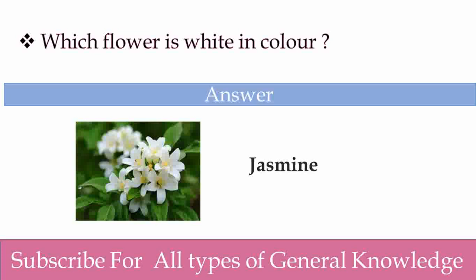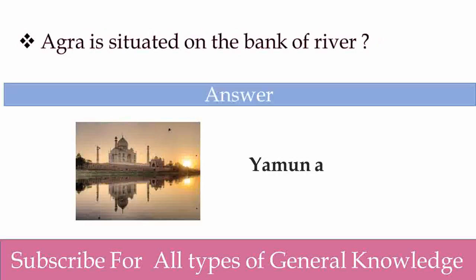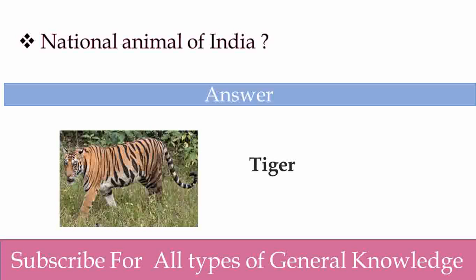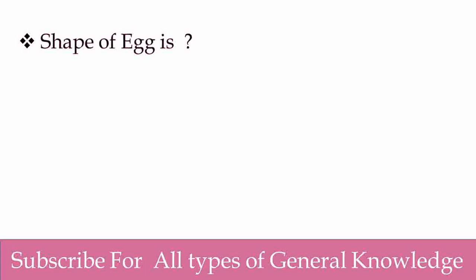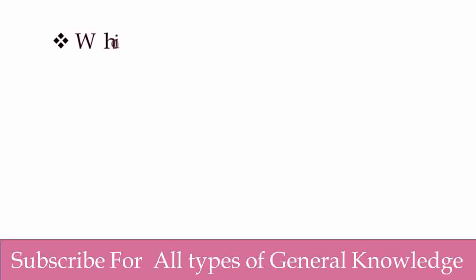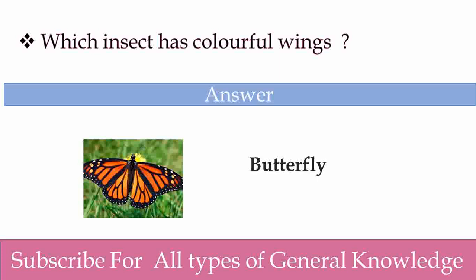And it smells very nice. Agra is situated on the bank of which river? Yamuna. Yes, Agra is situated on the bank of river Yamuna. National animal of India? Tiger. Right. Shape of egg is? Oval. Yes, shape of egg is oval. Which insect has colorful wings? Butterfly has colorful wings. Good.